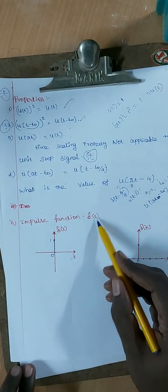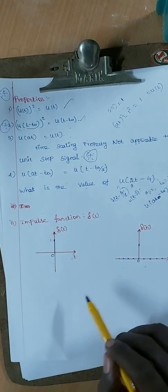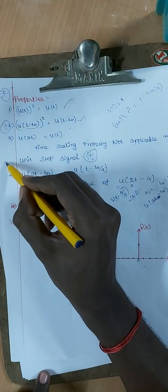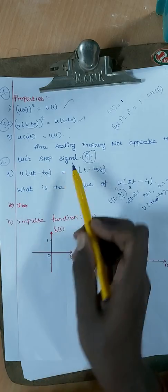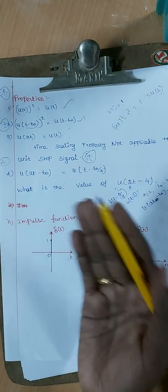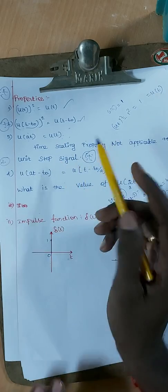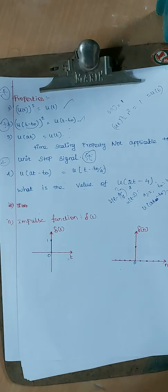The next topic is the Impulse Function, which will be covered in the next video. To summarize: the time scaling property is not applicable to the unit step signal. Thank you so much. Next video: Impulse Function.